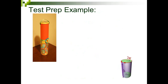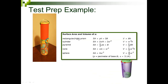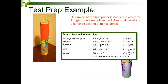Now it's our turn to practice. If you have paper and pencil handy, follow along. We have a Pringles can that someone has used as a gift package. We need to determine how much paper is needed to cover the container, given the following dimensions: 9.5 inches tall and 3 inches across. Using your chat box, identify which shape we are working with here.